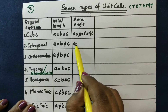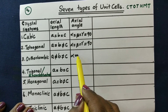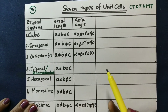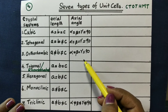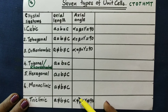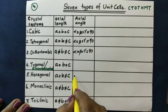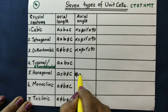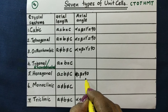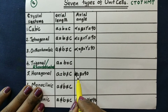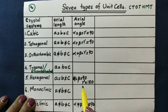The monoclinic system: alpha equal to beta equal to gamma equal to 90. Actually, alpha equal to gamma equal to 90, but beta is not equal to 90. This is the monoclinic system. The hexagonal system is very special: alpha equal to beta equal to 90, and gamma equals 120.